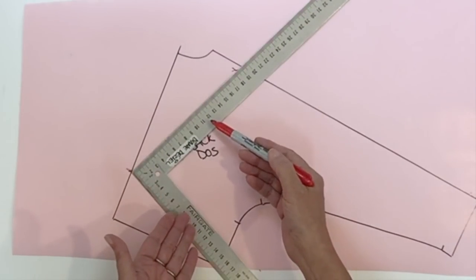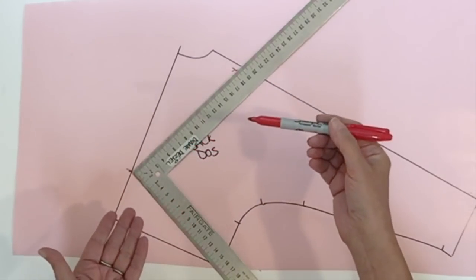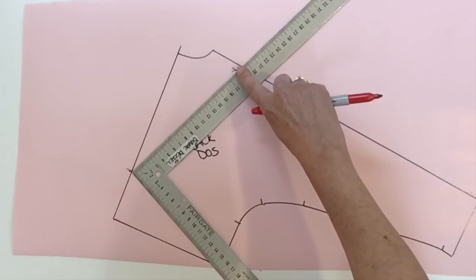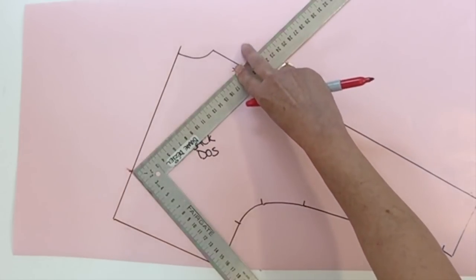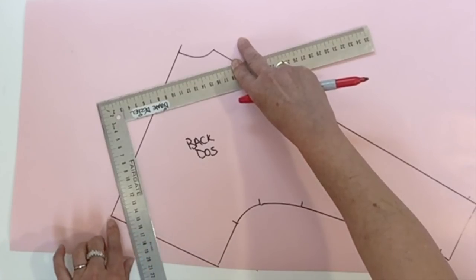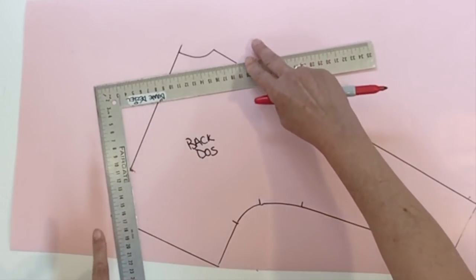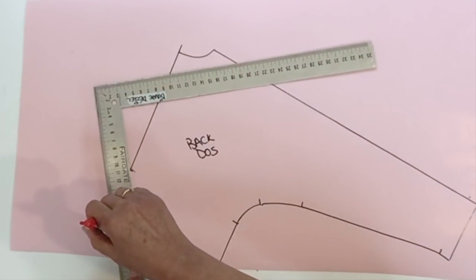Now you see that I'm using a square to take my measurement because I'm going to need the square to do my next move, and the next move is to hold your square at the neck and shoulder point, the new one, and pivot your square until the bottom of your square touches the waist and center back point. When it's in position you could just trace both sides of the square.